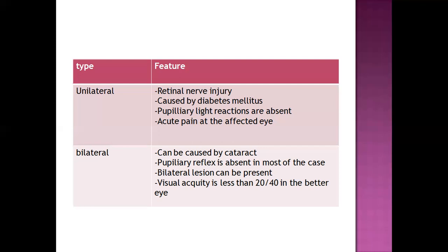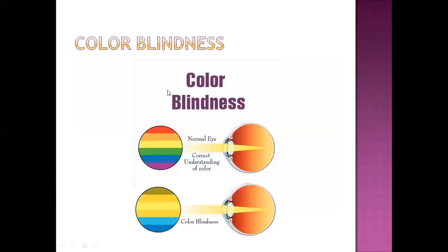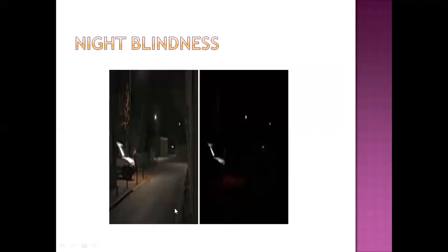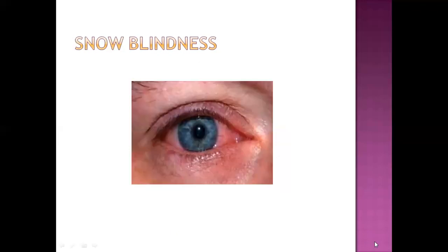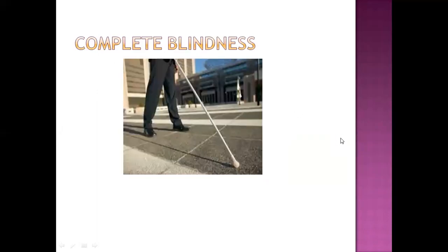In color blindness, a normal person can visualize all colors clearly whereas a color blind person cannot. In night blindness, the diagram shows how a person with night blindness sees at night compared to a normal person — the rods and cones pigment receptors are not able to work properly. In snow blindness, wherever there is exposure to snow, the eye becomes red, swollen, and irritated. In complete blindness, the person is not able to see anything, not even blurry images, and may need assistance for movement.